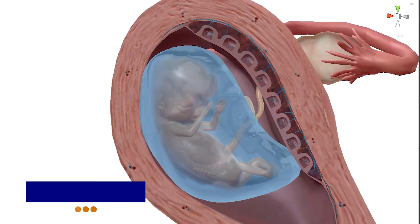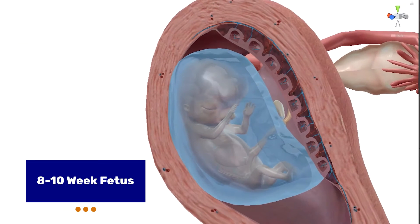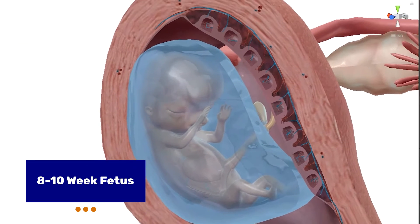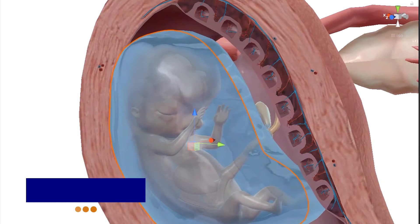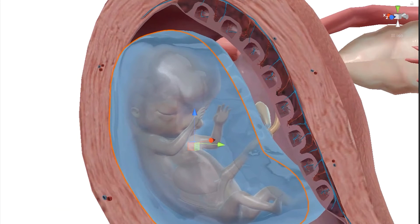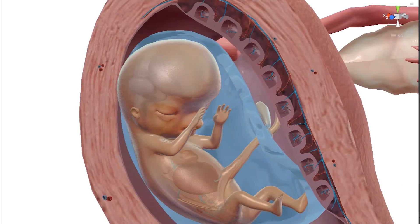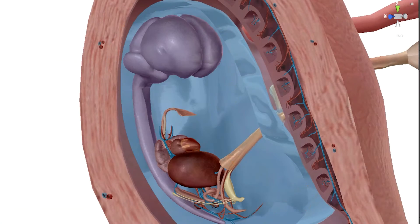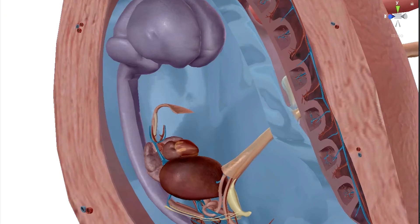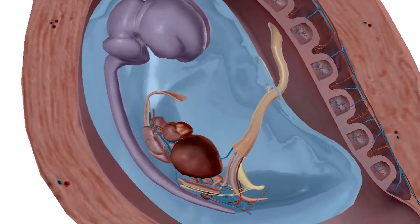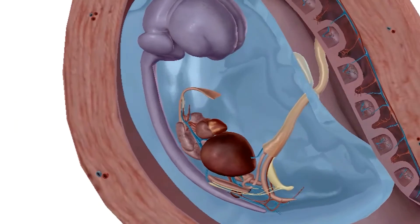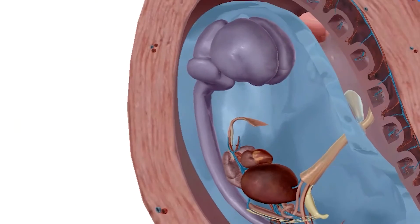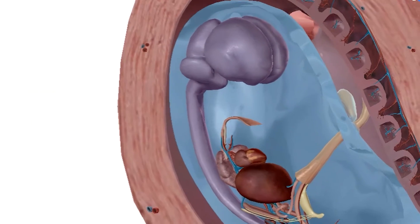The 8-10 week fetus model shows the fetus, amniotic sac, and placenta within the uterus, and inside the fetus itself you'll find some more recognizable organs, as well as a more developed heart and central nervous system.